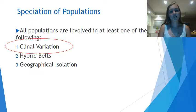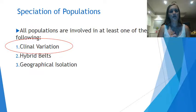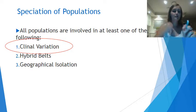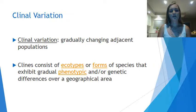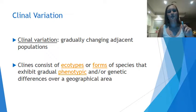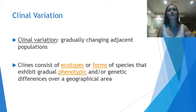When thinking about speciation of a population, all populations will be involved in at least one of the following: clinal variation, hybrid belts, or geographical isolation. For now, we'll focus on clinal variation. Clinal variation — you may have heard of clines — refers to gradually changing adjacent populations. A cline is a form of species that exhibits gradual phenotypic change over a geographical area.